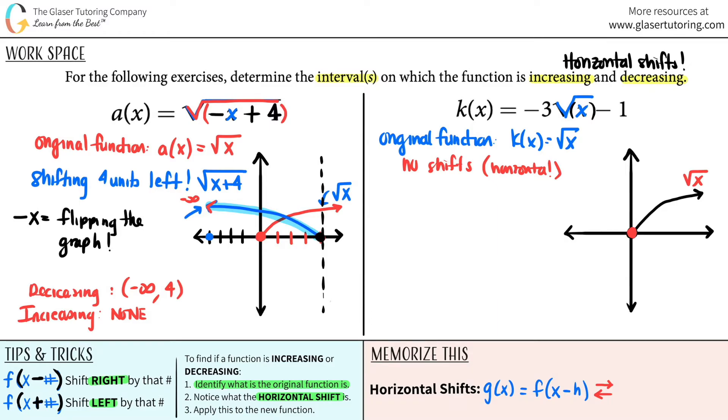However, you have to take note when you have negative values that are being multiplied by a function. Now, in this case, when you have a negative value that's being multiplied by the function, in this case it was square root of x, this is flipping also the graph.